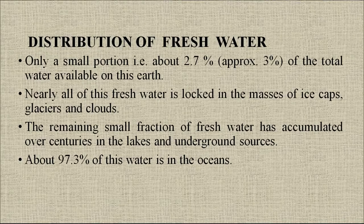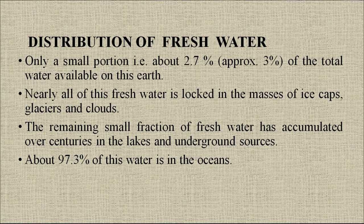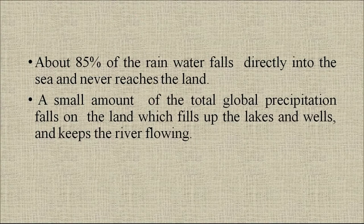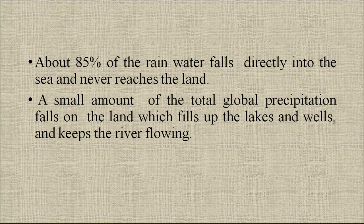Let us define what is fresh water. Fresh water is the water that has no salt and that we can drink. Regarding distribution of fresh water, only a small portion — about 2.7 percent of the total water — is available on this earth. Nearly all of this fresh water is locked in the masses of ice caps, glaciers and clouds. The remaining small fraction has accumulated over centuries in lakes and underground sources. About 97.3 percent of this water is in the oceans. About 85 percent of the rainwater falls directly into the sea and never reaches the land.